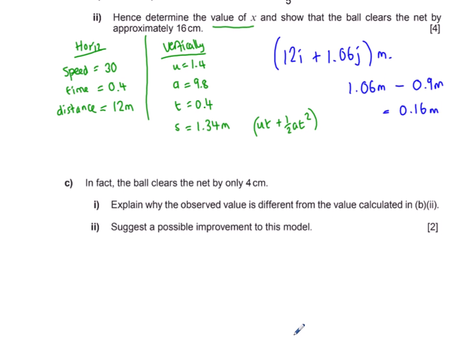Explain why the absolute value is different from the value calculated in part two. Lots of things you could put here. Air resistance would be a good one. Spin on the ball. If you watch tennis you can see that they get the ball to move unexpectedly using spin. You could have put in anything about the particle model doesn't take into account the size of the ball. A bigger ball obviously is a bit harder to get over the net because of the thickness or the diameter of the ball itself. So just a possible improvement to this model. It's difficult to do but you could try and include some sort of friction term so the 30 meters per second horizontally is not constant or that it doesn't accelerate downwards at 9.8 meters per second squared because of air resistance.